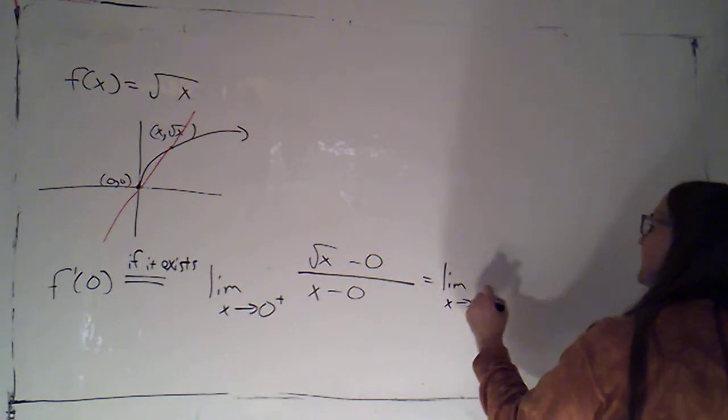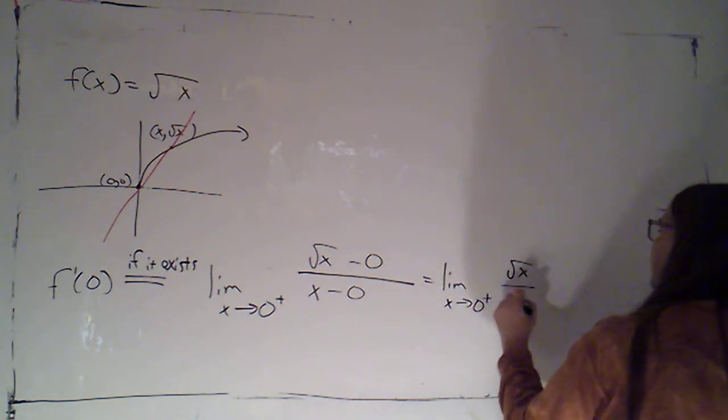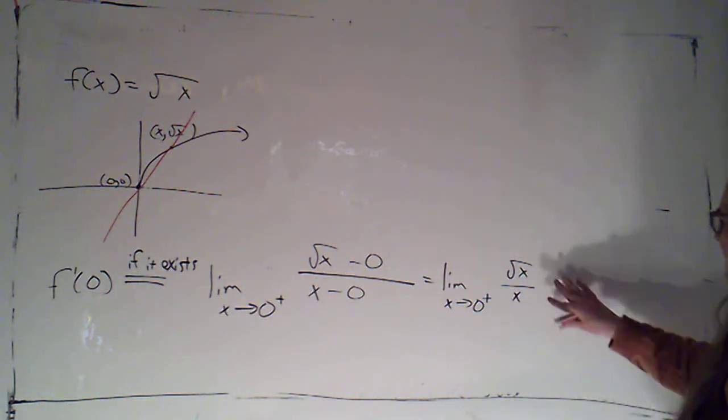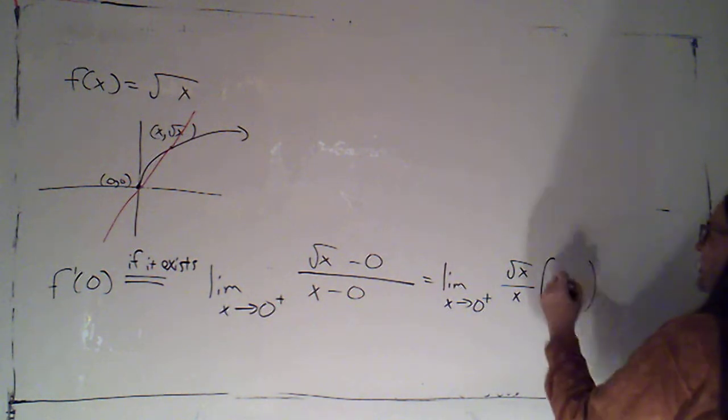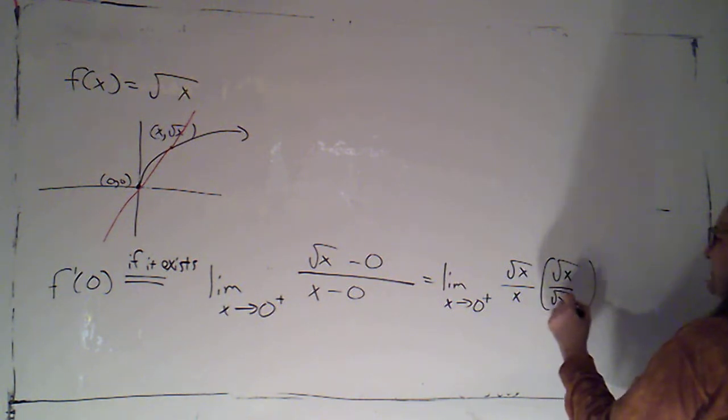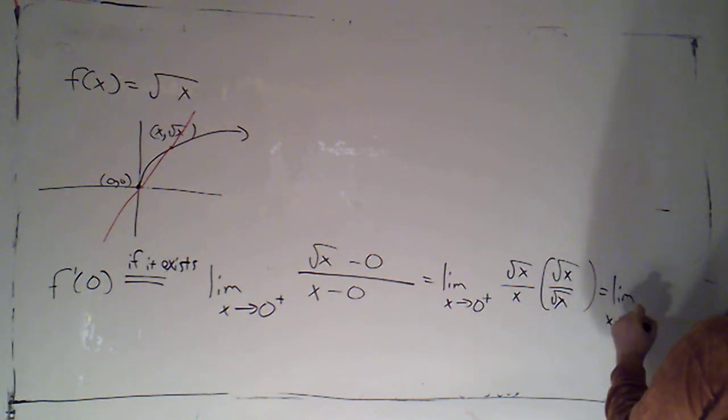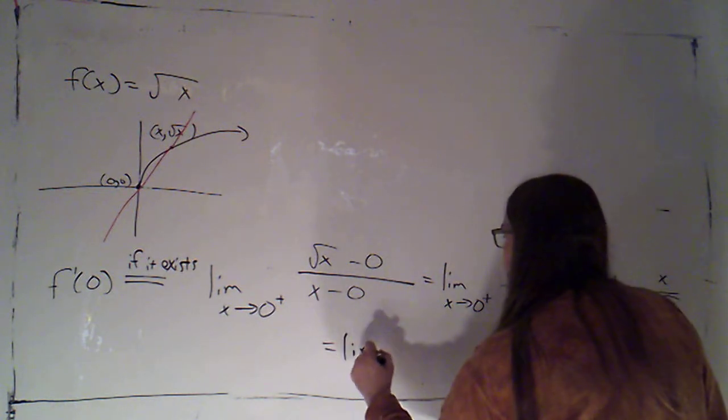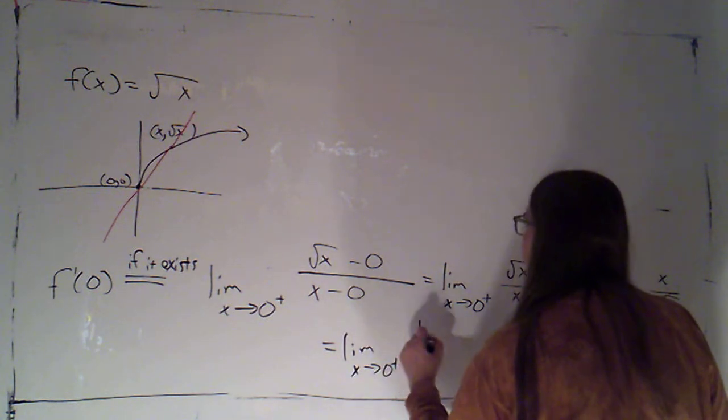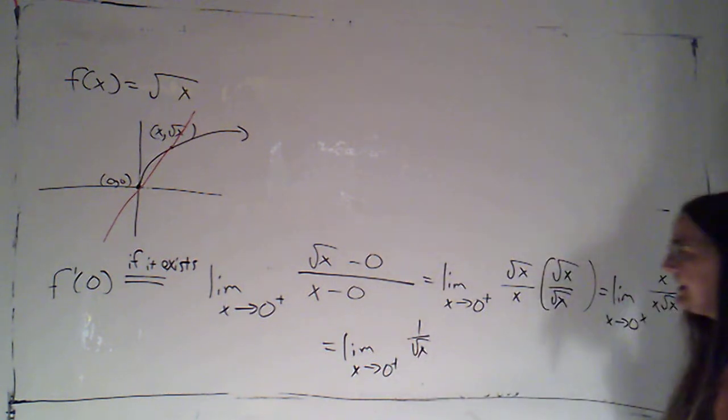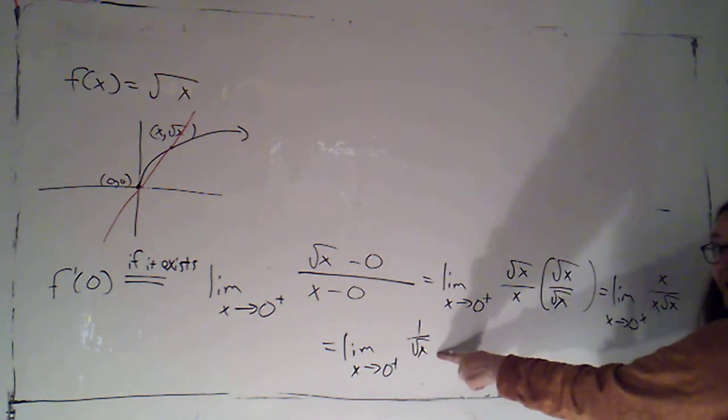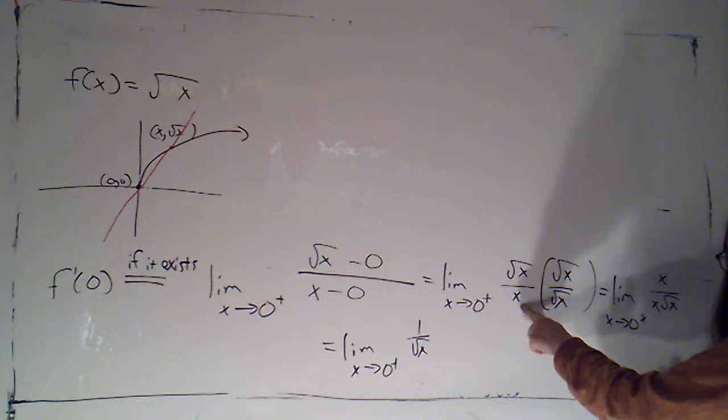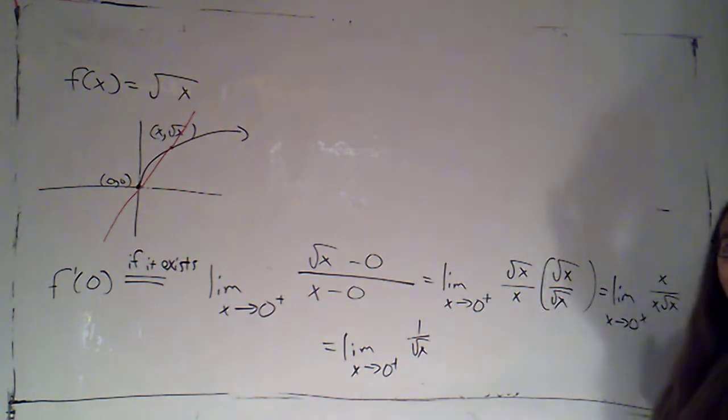That's the limit as x goes to zero from the right of root x over x. I could rationalize this multiplying by one in the form of root x over root x. That's the limit as x goes to zero from the right of x over x root x. And I can cancel an x. So, I'm going to get the limit as x goes to zero from the right of one over root x. Some of you might have felt comfortable going right from here to here. Just recognizing that x, since it's a positive number in this case, is the same thing as just two factors of root x and then one of them cancels.